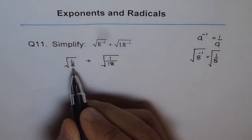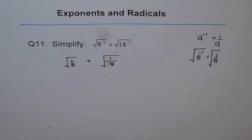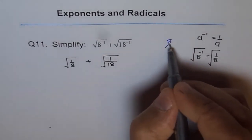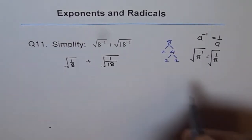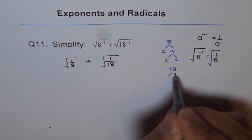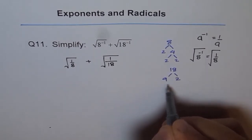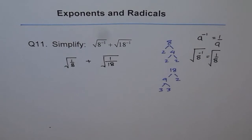Now we will factor 8 and 18 as we did earlier. So I will draw my factor tree. So 8 could be written as 2 times 4 and 4 is 2 times 2. Similarly 18 can be written as 9 times 2 and 9 is 3 times 3. So we did prime factorization.